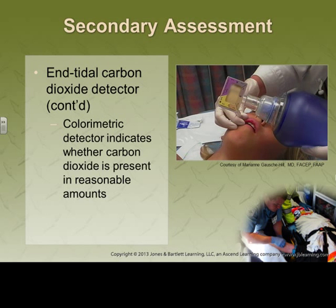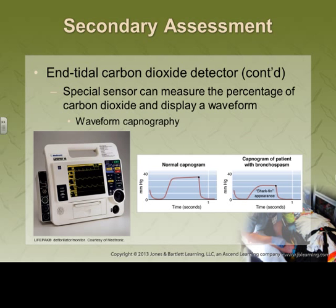Your colorimetric device — you should be very familiar with that. Yellow means yes. We're looking for a change from purple to yellow, and that's going to be a confirmation tool as well. We're looking for a normal capnogram, which will have your plateau, then your inspiratory, and then your expiratory.